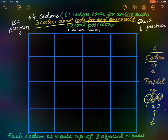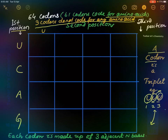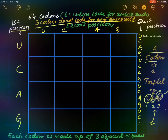You can see here it is written 'first position.' For the first position we have to write U, C, A, G. For the second position we also have to write U, C, A, G. For the third position we have to write U, C, A, G — repeating across all columns.